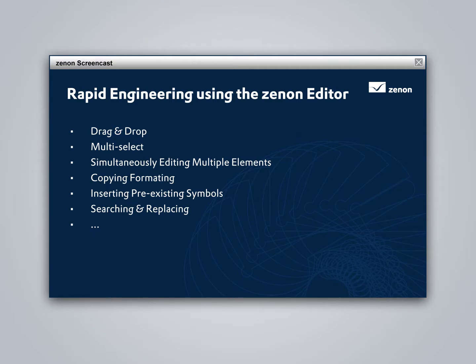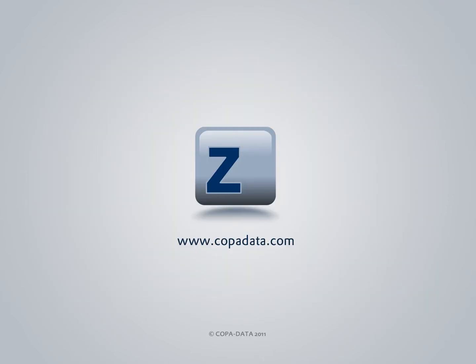Drag and drop, multi-select, simultaneous editing of multiple elements, copying, formatting, inserting symbols from the Symbol library, searching and replacing — these are just a few examples of the many well-known usability features in the Xenon editor which enable rapid project engineering. Interested in learning more? Feel free to contact us anytime.